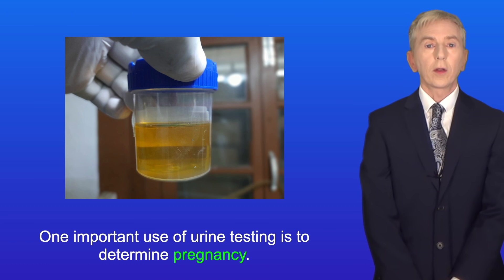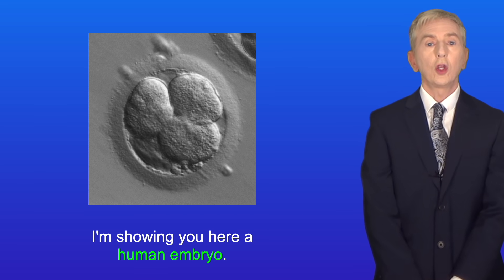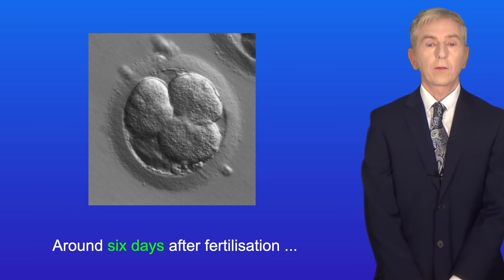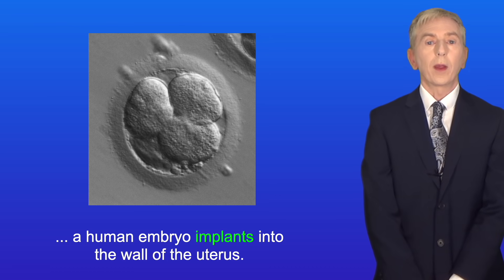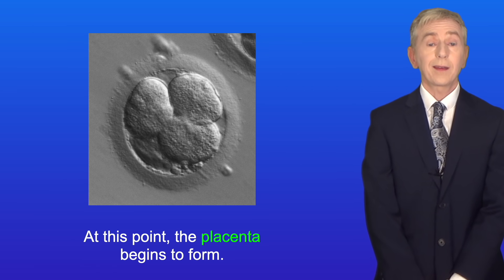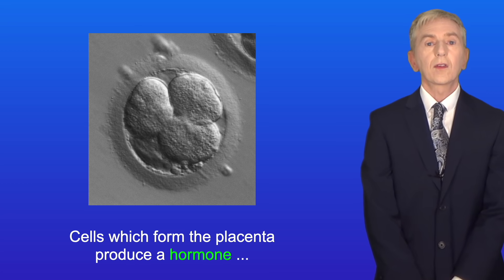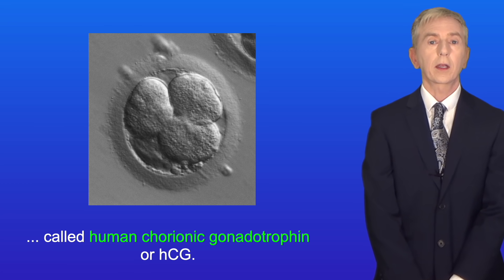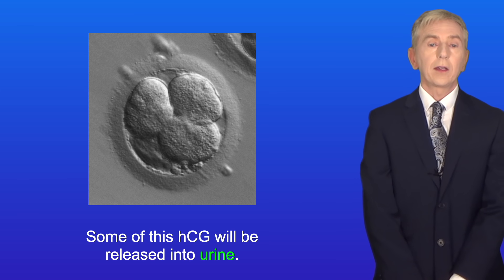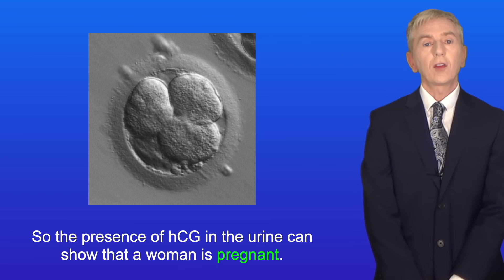One important use of urine testing is to determine pregnancy. I'm showing you here a human embryo. Around six days after fertilization, a human embryo implants into the wall of the uterus. At this point the placenta begins to form. Cells which form the placenta produce a hormone called human chorionic gonadotropin or HCG. And some of this HCG will be released into urine. So the presence of HCG in the urine can show that a woman is pregnant.